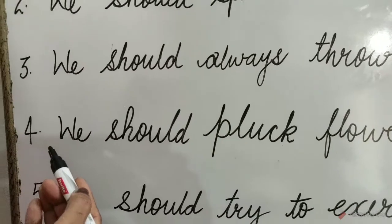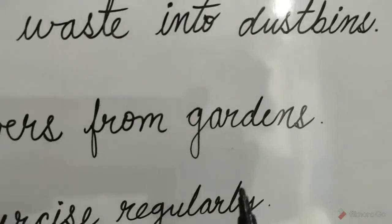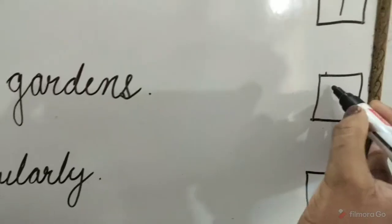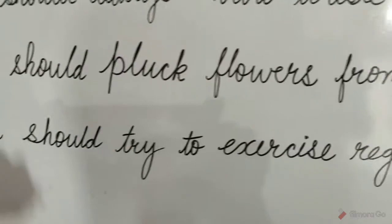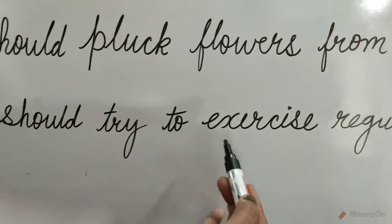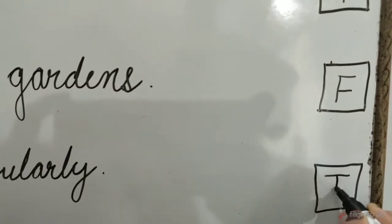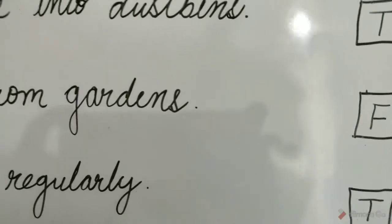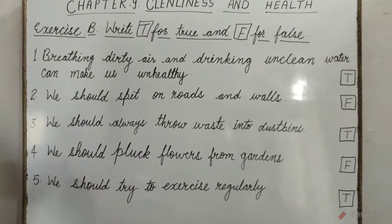Question 4: We should pluck flowers from gardens. No children, it is a bad habit. So write F in the box. Question 5: We should try to exercise regularly. Yes, it is true — write T in the box. Children, exercising regularly is a good habit.